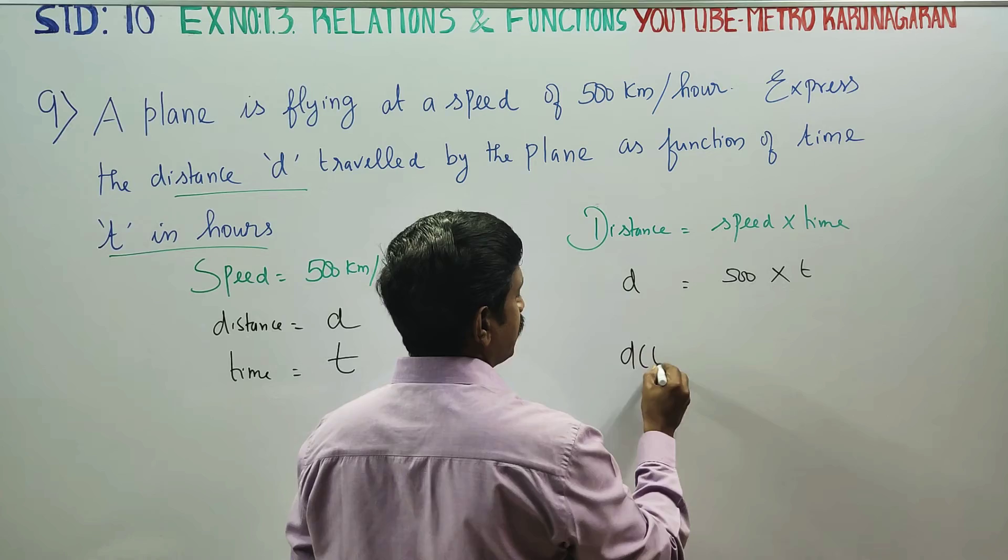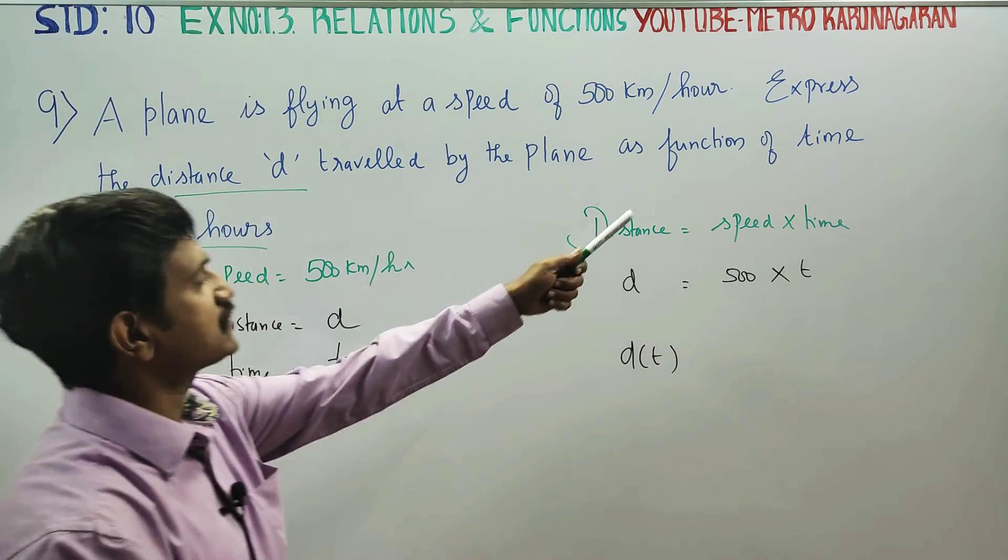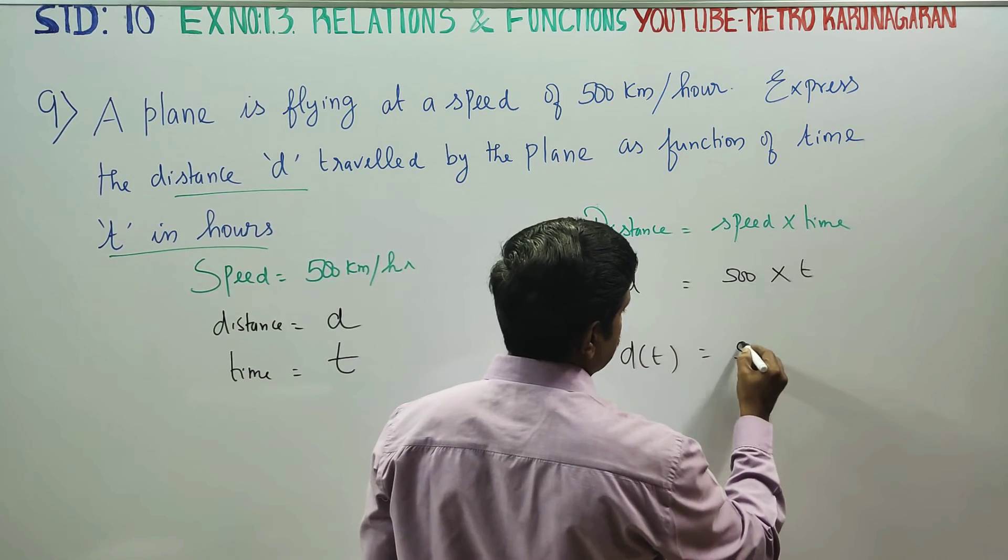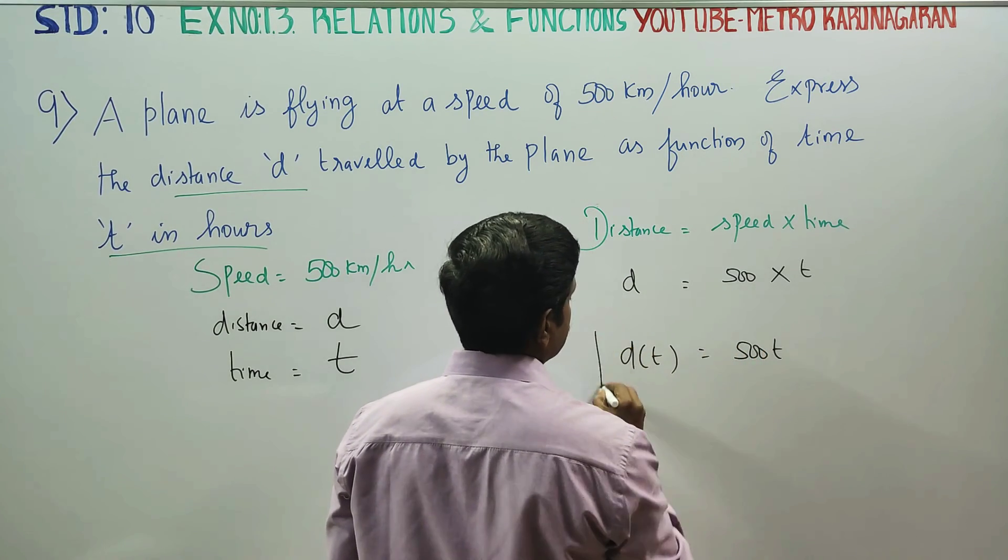Then d of t, function of t, is equal to 500t. This is the function.